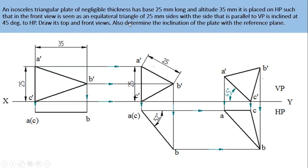So here the lamina is an isosceles triangular lamina. So what is the base dimension? It is 25 mm and altitude. Altitude is nothing but the height from the center to the tip. It is known as the altitude. Altitude is 35 mm.